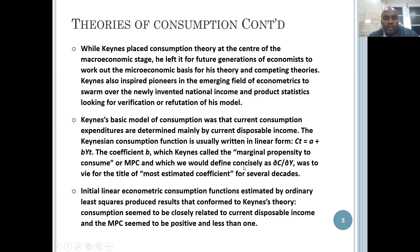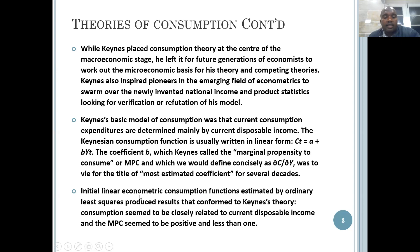If we are to define the marginal propensity to consume, it's simply delta C over delta Y, or DC/DY — the change in aggregate consumption as a result of a unit change in national income. At the early stages, linear econometric consumption functions estimated by the method of ordinary least squares produced results that seemed to confirm Keynes' articulation of the theories of consumption.